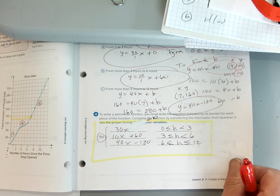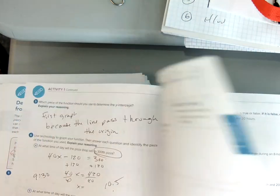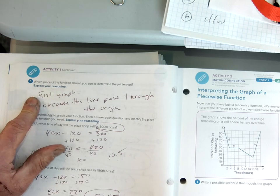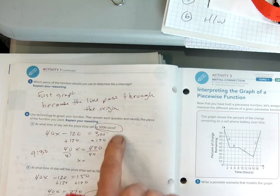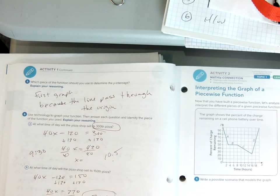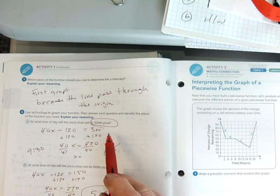So then I turn the page and we answer some questions. So now, the y-intercept was easy for the first graph because we could see it. We know it went through the origin. But the other graphs, we had to use y equals mx plus b.